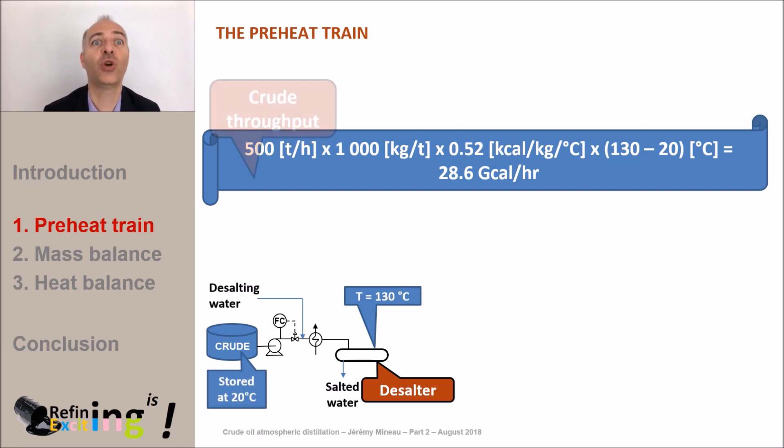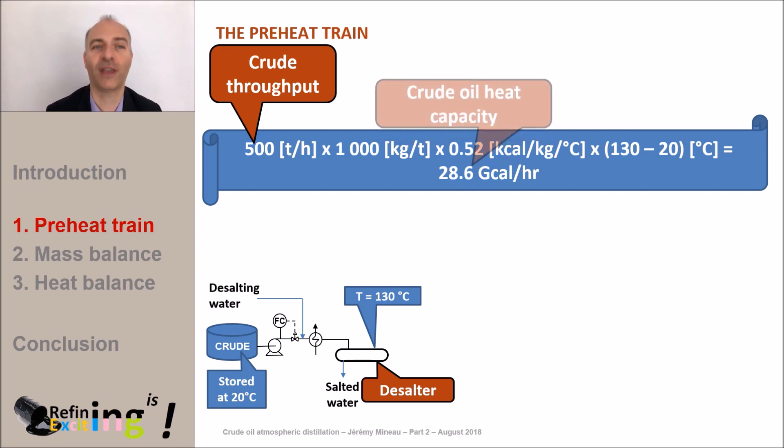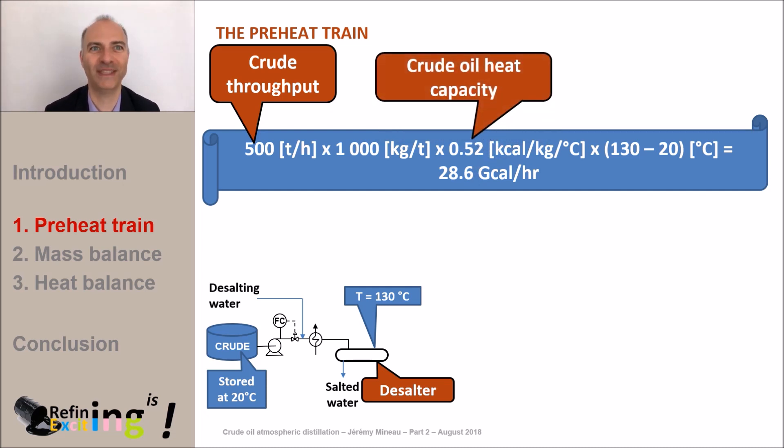To calculate this energy quantity we need to know the heat capacity of the crude. This heat capacity is about 0.52 kilocalorie per kilo and per degree C. It simply means that one kilogram of crude oil requires 0.52 kilocalorie to be heated up by 1 degree C.